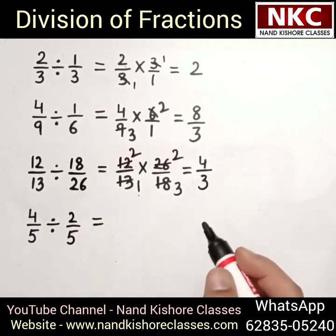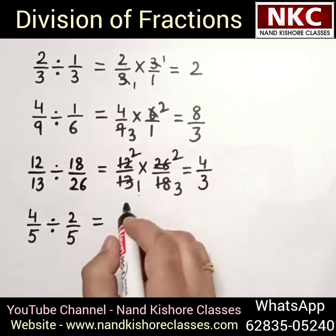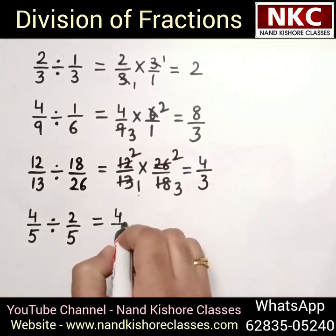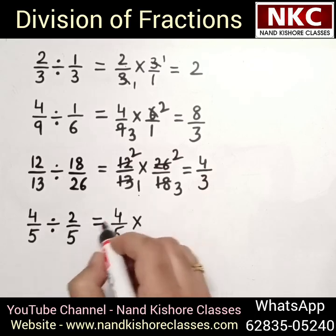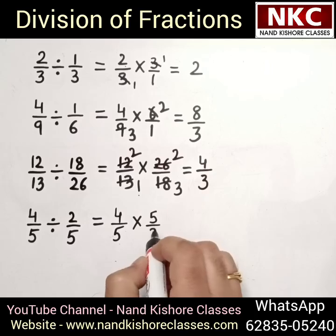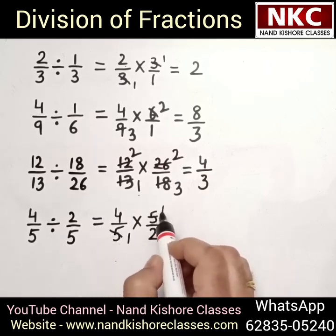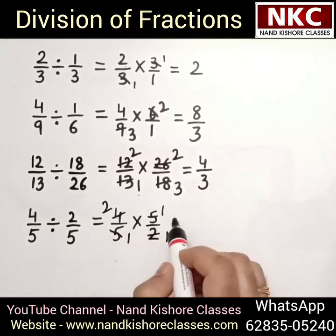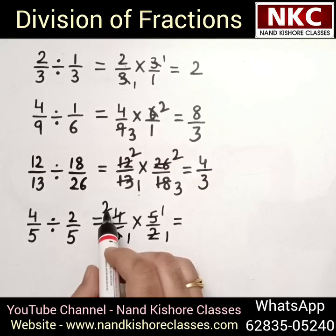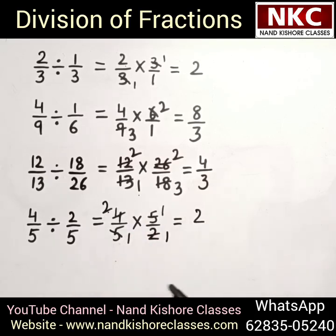Check this question — after that I'll give you one question to solve and you need to give the answer in the comment box. Change the sign of division to multiplication, and 2 over 5 becomes 5 over 2. Cancel out the 5s — 2 times 1 is 2 and 2 times 2 is 4. Finally, this 2 is multiplied with 1, giving 2. So the final answer of this question is 2.